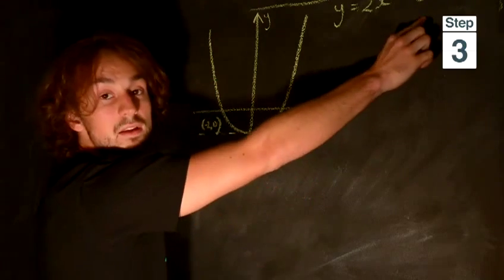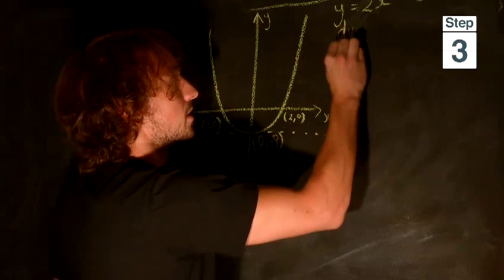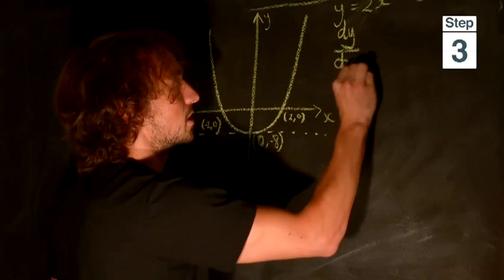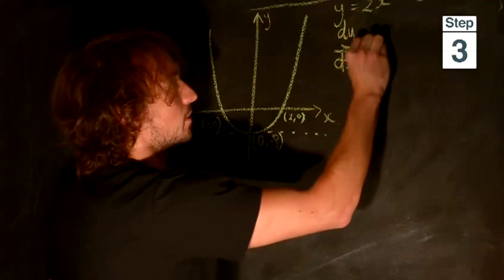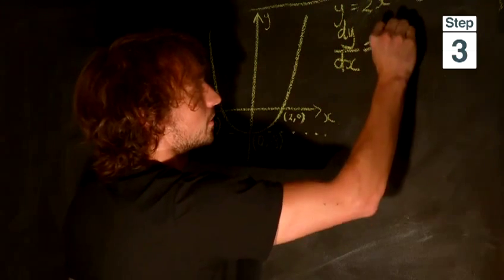So to find the gradient of this point, we need to differentiate. To do that, we do this. Differentiating, we take the power down, multiply it by the coefficient, and lower the power by 1. So 4x.